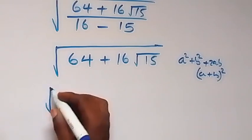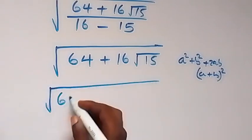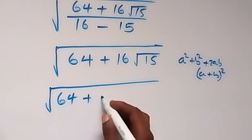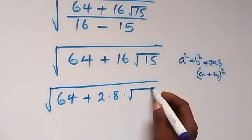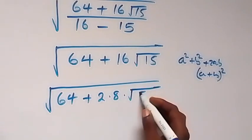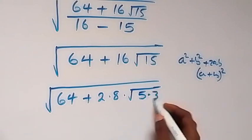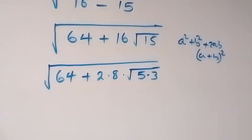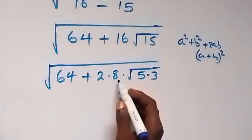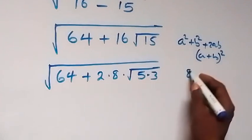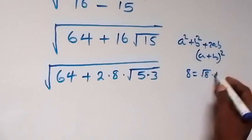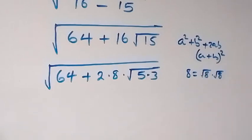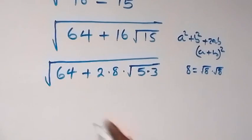So we have the square root of 64 plus 2 times 8 times root 15. Let's write root 15 as root 5 times root 3. Also, 8 can be written as root 8 times root 8, since (root 8)² = 8.